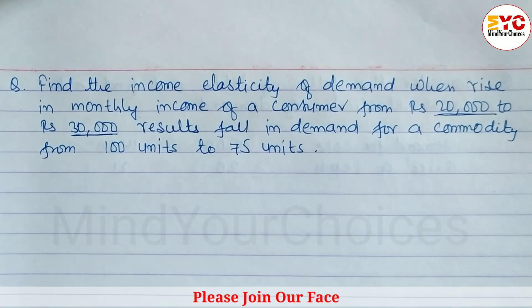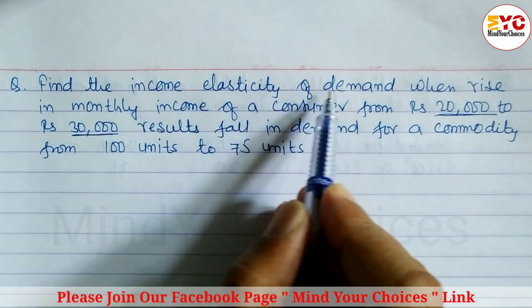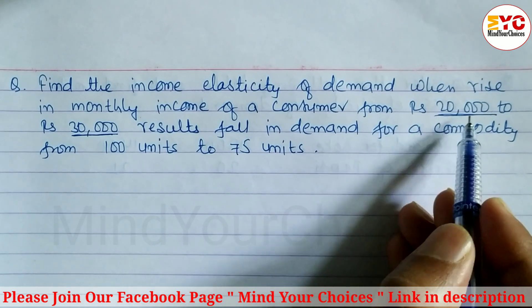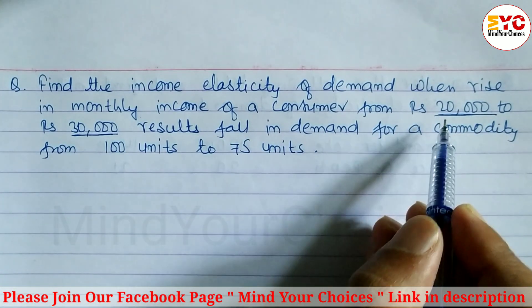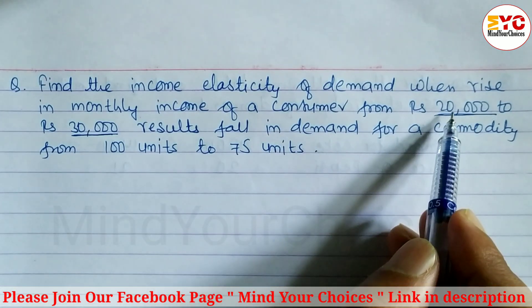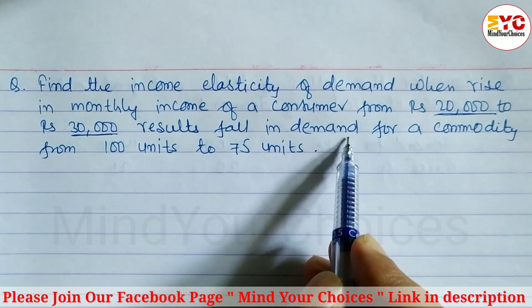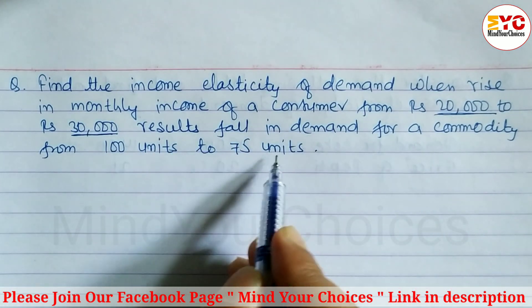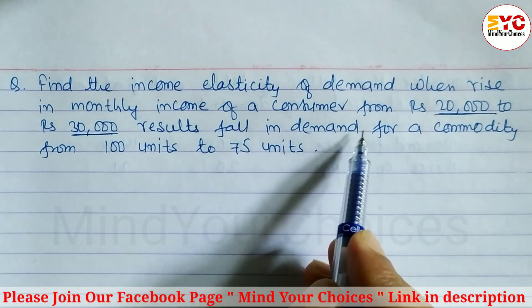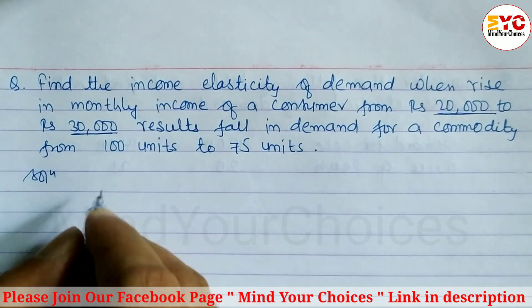Here we have a question taken from elasticity of demand and supply. Find the income elasticity of demand when a rise in monthly income of a consumer from 20,000 to 30,000 results in a fall in demand for a commodity from 100 units to 75 units. So let's find the income elasticity of demand.